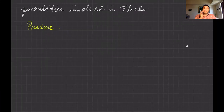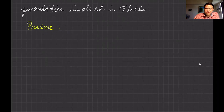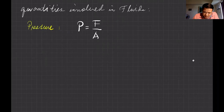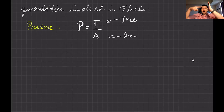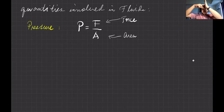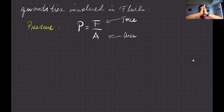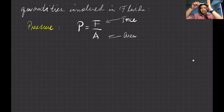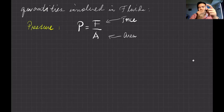Now let's define pressure. Pressure is defined as force per unit area — force divided by area. The pressure depends on both the force and the area. The same force applied over a smaller area produces higher pressure than over a larger area, so area is inversely proportional to pressure.